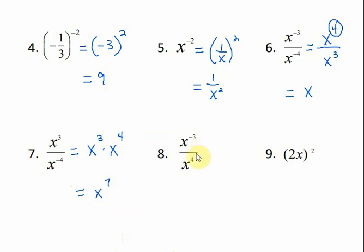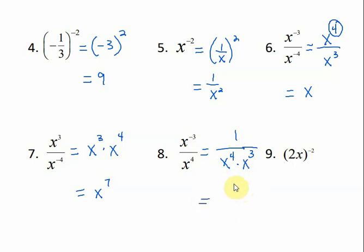Same thing for number 8. The x to the 4th is positive, so I leave it alone where it is. The x to the negative 3 needs to move down to the bottom. To show these things are in the denominator I put a 1 over it. Then I combine by multiplying my bases — adding the exponents gives me 1 over x to the 7th.